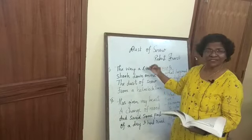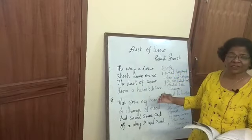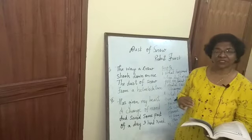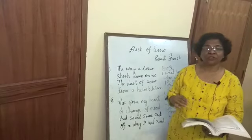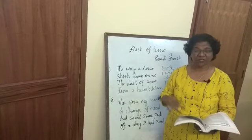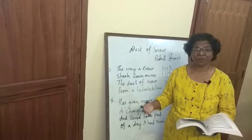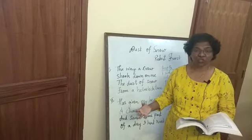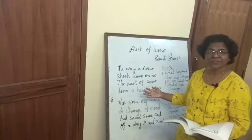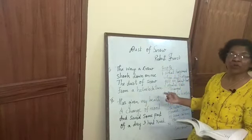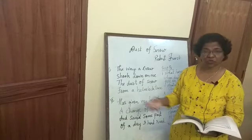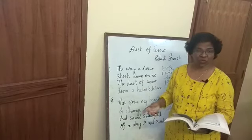In these two stanzas, poet Robert Frost is trying to depict the sorrows — the sorrow that he had within himself. The crow probably meant to represent sorrow, and the hemlock tree is a poisonous tree which is also considered to be sorrowful.